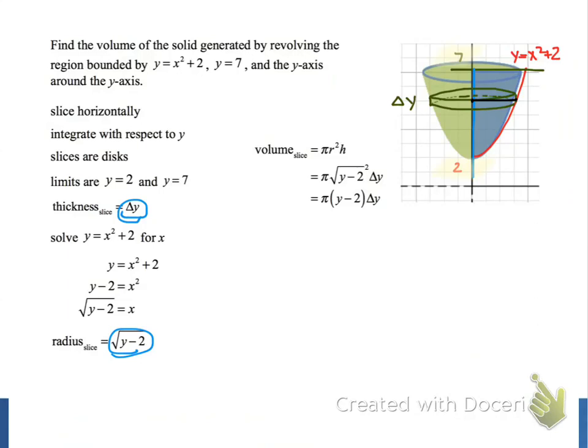When we add up the volume of the slices, we get an approximation of the volume of the solid. We can improve this approximation by using more and more slices. When we take the limit as the number of slices approaches infinity, we get a definite integral that will calculate the exact volume of our object. Here we see our definite integral, pi times the integral from 2 to 7 of y minus 2 dy.